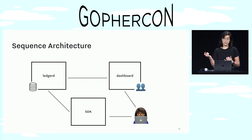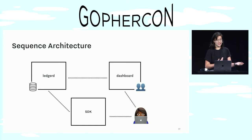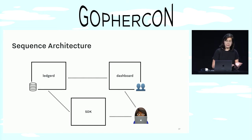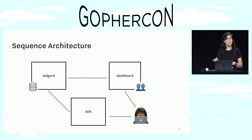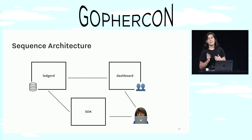And then we also have Dashboard, which is a Rails app that provides a nice web interface for users and also does all the user management. So Dashboard is the app that knows about users, teams, emails, and things like that. And when a customer uses Sequence, they often use the Dashboard, but they can also use an SDK in their client application that talks to LedgerD directly.